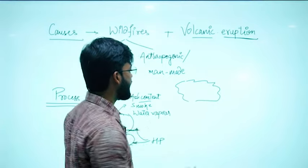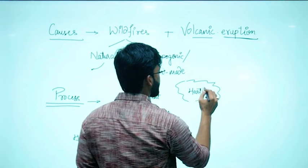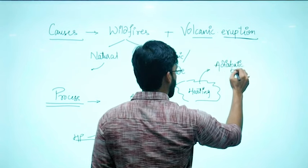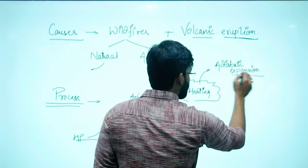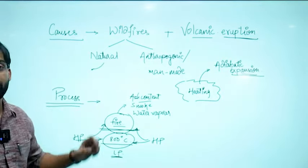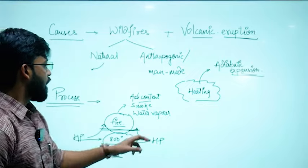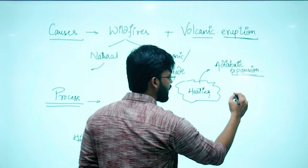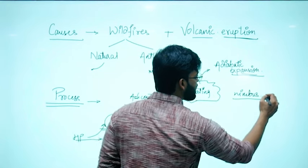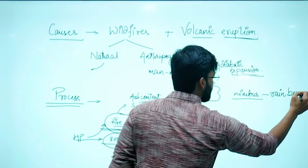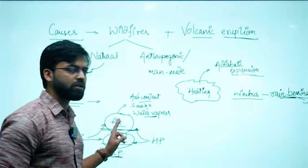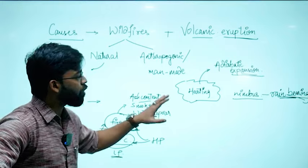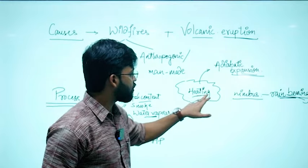Because of the heating, these clouds further rise and when they rise there is adiabatic expansion. Since the source of these clouds is fire, they are known as pyrocumulonimbus clouds - 'pyro' means fire. Water vapor content is comparatively less in these clouds, though 'nimbus' is written in the cloud name, which means rain-bearing clouds. The quantity is very less because the source is a fire region, not an oceanic or water body region. So the amount of rain that falls is less.